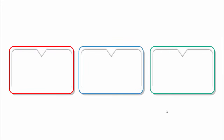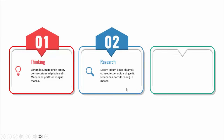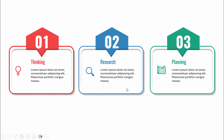In today's tutorial I'm going to show you how to create a three options infographic slide in PowerPoint. When I click it will show option one — thinking — then option two — research — and then option three — planning. Depending on the requirement you can increase or decrease the number of options.